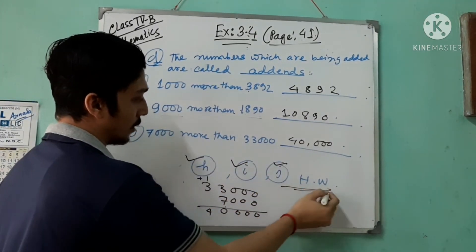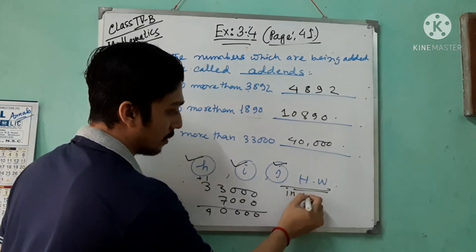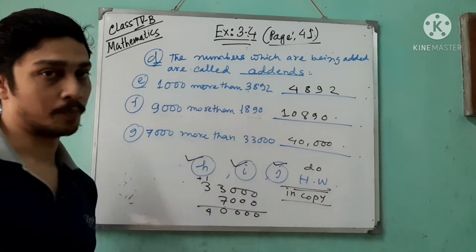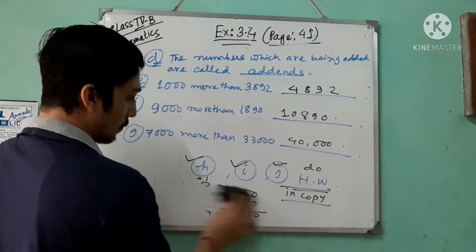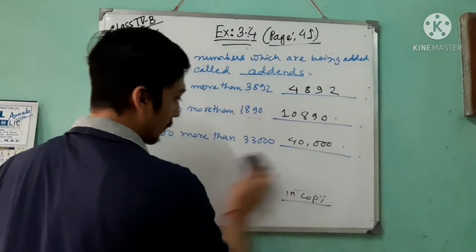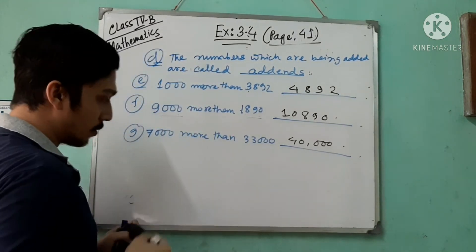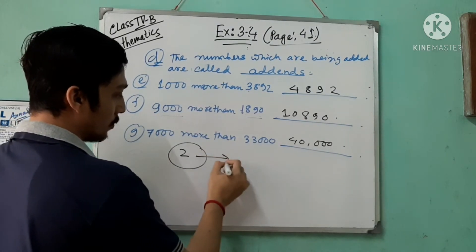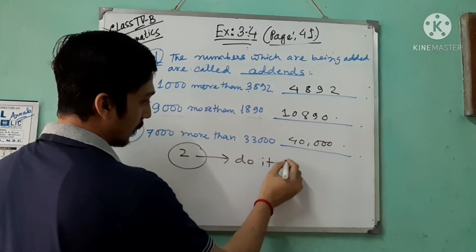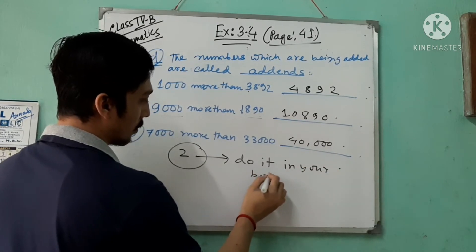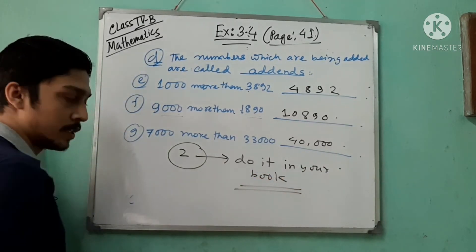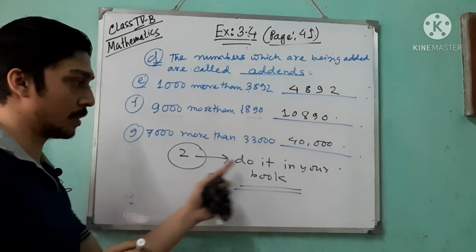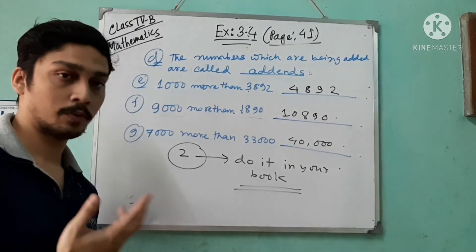Questions h, i, j are your home task — please do them in your copy. Also question number two, which is in your book — you have to do it in your book. All the sums in question number two, do them in your book.